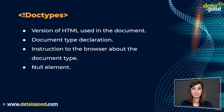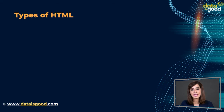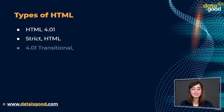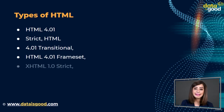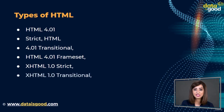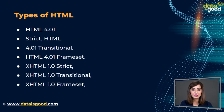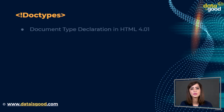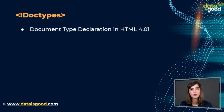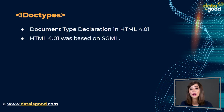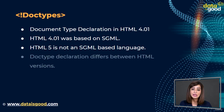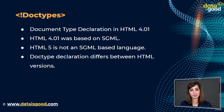Actually, there are many types of HTML. For example: HTML 4.01 Strict, HTML 4.01 Transitional, HTML 4.01 Frameset, XHTML 1.0 Strict, XHTML 1.0 Transitional, XHTML 1.0 Frameset, XHTML 1.1, etc. The doc type declaration differs between versions. In HTML 4.01, the declaration was based on SGML, but HTML5 is not an SGML-based language, so the doc type declaration differs between HTML 4.01 and HTML5.